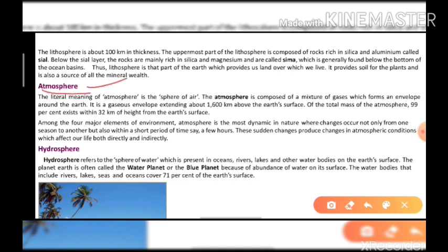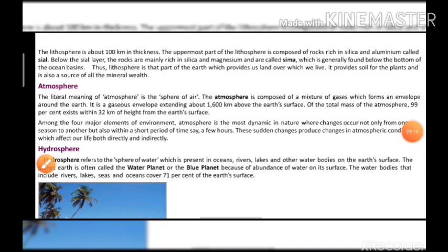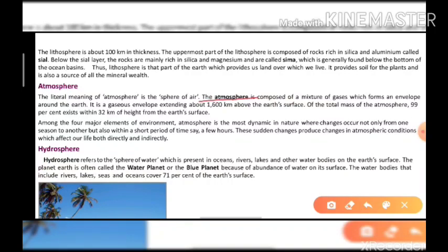Next is the atmosphere. The literal meaning of atmosphere is 'sphere of the air.' The atmosphere is composed of a mixture of gases which forms an envelope around the earth. We cannot see the air but we can feel it. The atmosphere extends up to 1600 km from the earth's surface.